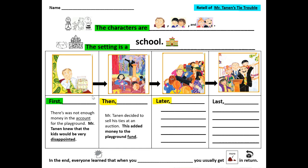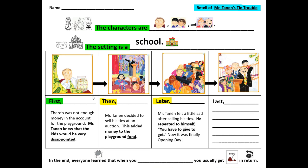Later — how did Mr. Tannen feel after he sold his ties? Later, Mr. Tannen felt a little sad after selling his ties. He repeated to himself, 'You have to give to get.' Now it was finally opening day — opening day for the new playground.